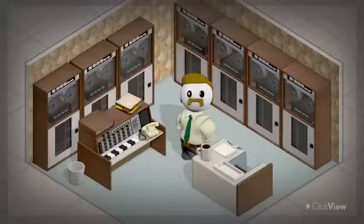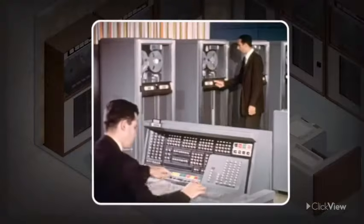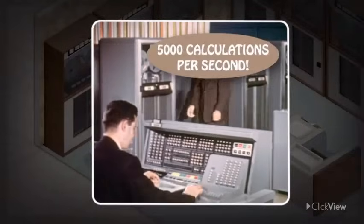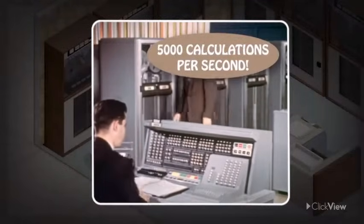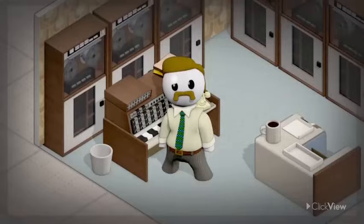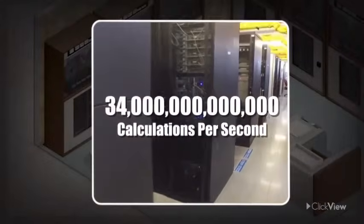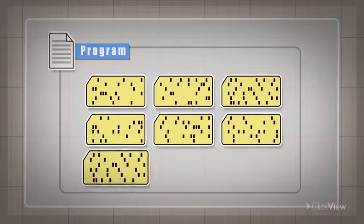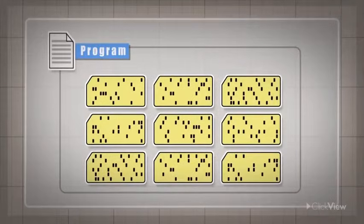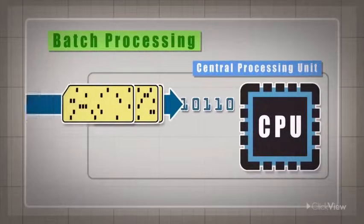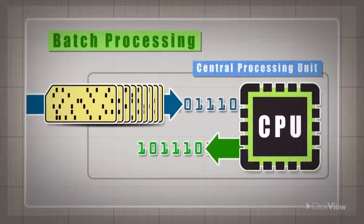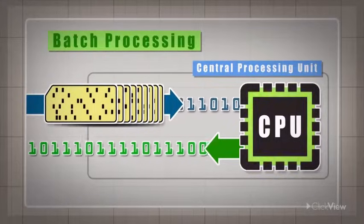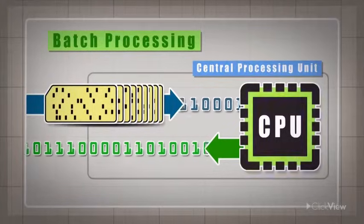Let's go back in time to the invention of digital computers. They could handle around 5,000 complex calculations per second — impressive for the time — but today's supercomputers perform nearly 34 trillion calculations per second. Programs were written on punch cards, pieces of cardboard with holes, which were fed one at a time into the central processing unit, or CPU, enabling the earliest form of computer batch processing.